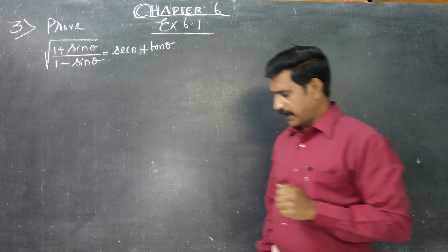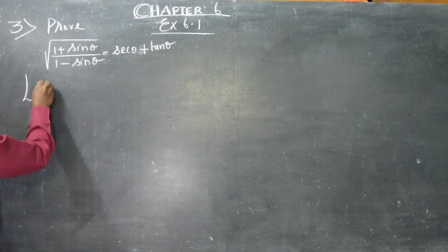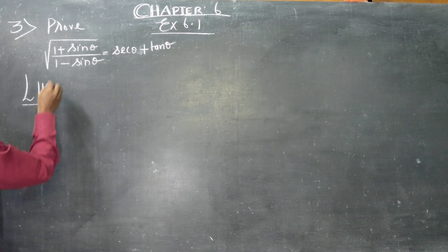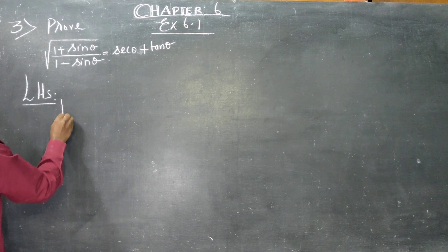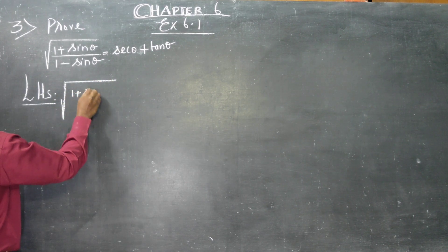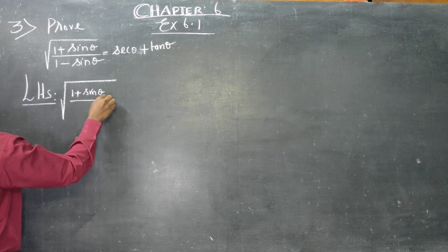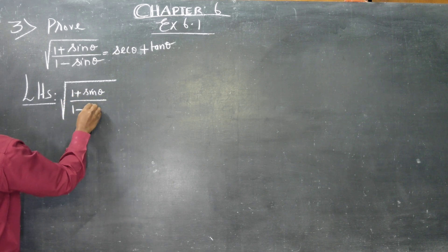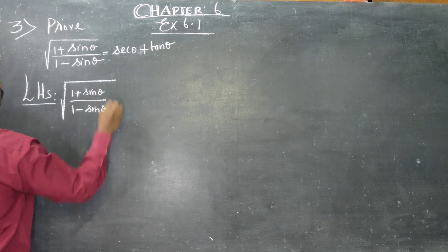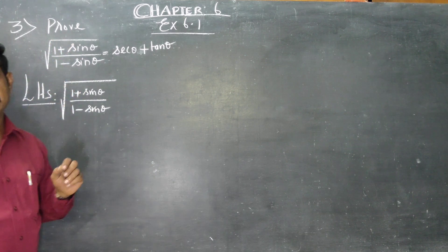I am going to start with my LHS. My LHS is the square root of (1 plus sin theta) into (1 minus sin theta). I have written my LHS.